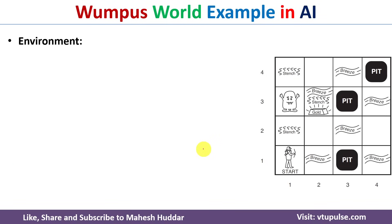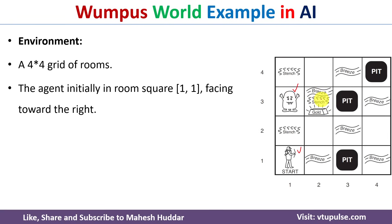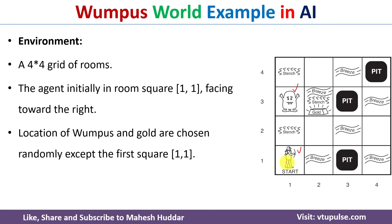The second component of the PEAS description is the environment. The environment contains a four by four grid of rooms with passageways. There is a knowledge-based agent; there are some rooms with bottomless pits, a room where the Wumpus is present, and some rooms where a heap of gold is found. Initially the agent is present at 1,1. The Wumpus, gold, or pit can be present anywhere apart from 1,1.